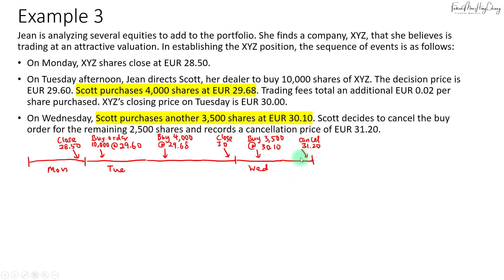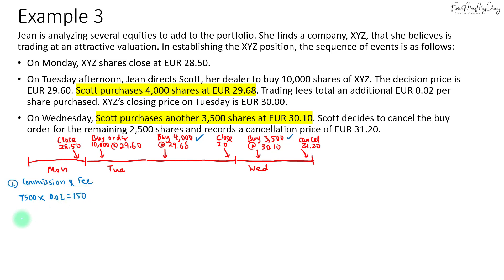We need to calculate the delay cost, realized loss, commission and fees, and the missed trade opportunity cost. For commission and fees, this is straightforward: we bought a total of 7,500 shares (4,000 and 3,500) at 2 cents each, so that's 150 euros. Taking 150 over the initial paper portfolio value of 296,000 and converting to basis points gives approximately 5.07 basis points.